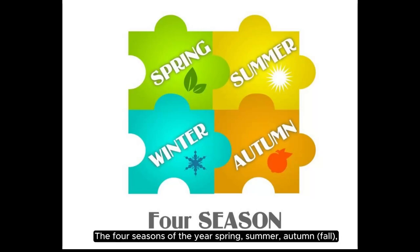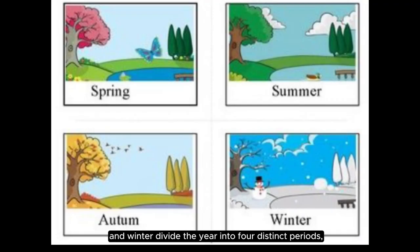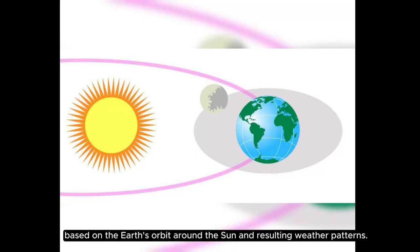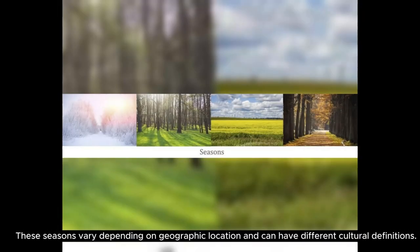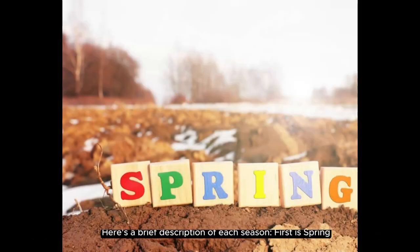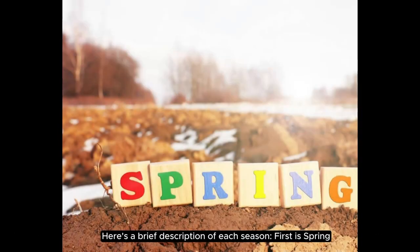The four seasons of the year — spring, summer, autumn, fall, and winter — divide the year into four distinct periods based on the Earth's orbit around the sun and resulting weather patterns. These seasons vary depending on geographic location and can have different cultural definitions. Here's a brief description of each season.